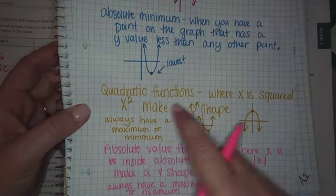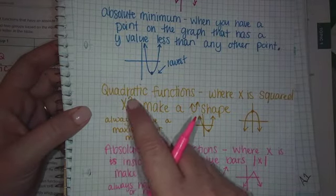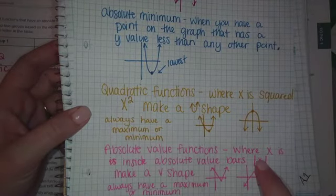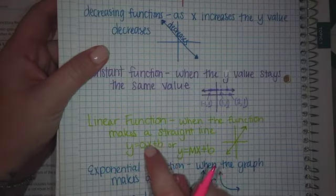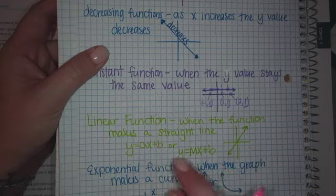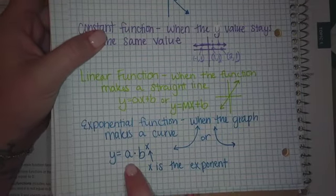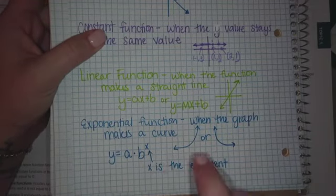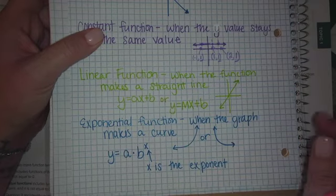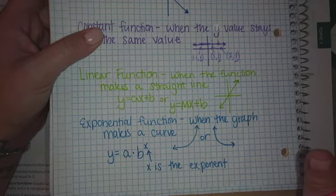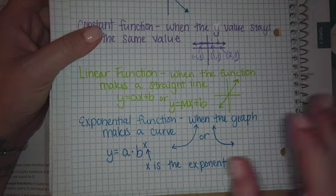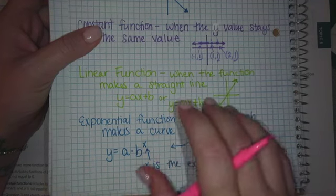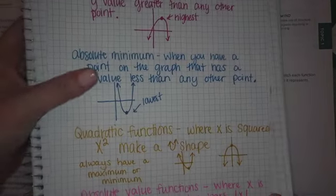So this time we talked about quadratic functions where X is squared, and absolute value functions where X is inside absolute value bars. Last time we talked about linear functions where you have X times a number, and exponential where X is the exponent. Those are the four big types of functions we talk about in algebra — make sure you have all of that written down.